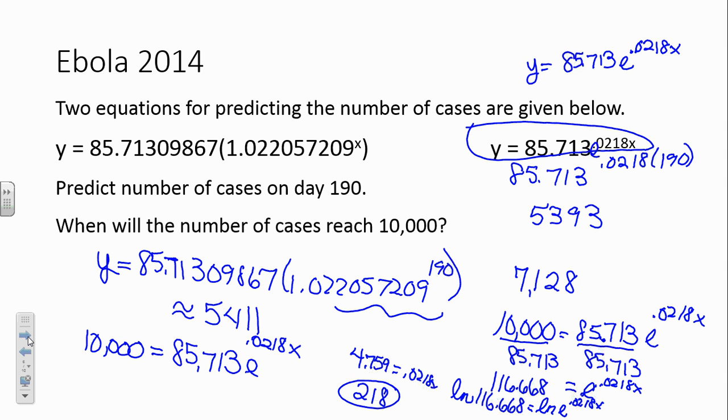Everybody's okay forward and backward. If you have the number of days, you can predict the number of cases, if our model's accurate. And if you have the number of cases that you're looking at, you can predict the number of days that that would take to happen.